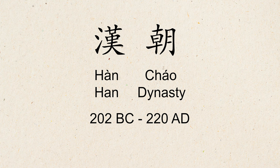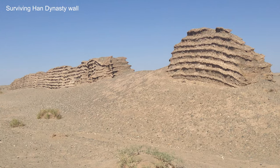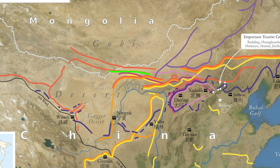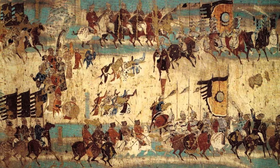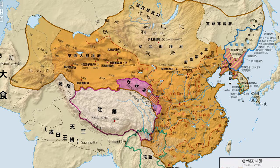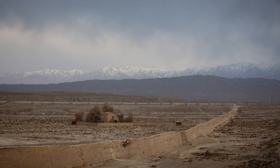In the Han dynasty, 汉朝, that came directly after the Qin, they strengthened the Qin wall to protect against the Xiongnu, and also extended the wall west along the Silk Road in what is now Gansu and Xinjiang provinces. As time went on, each successive dynasty added and repaired sections of the wall, until the Tang dynasty, 唐朝, when China became so strong militarily that her borders extended beyond the frontier marked by the Great Wall, and thus the walls became redundant.